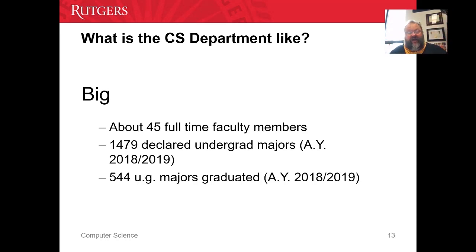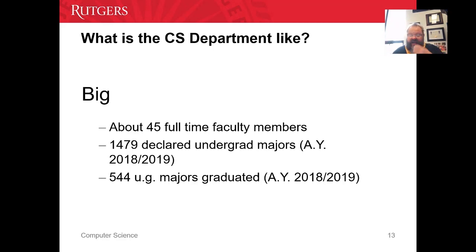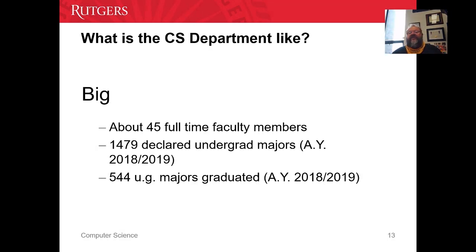As far as the CS department here at Rutgers, we are a Big Ten public research university, so we're big. We have about 45 full-time faculty members. Last year we had 1,500 declared computer science majors. Those aren't all the people taking our classes — we also have minors and people who want to come and take our classes to learn how to program. Cognitive science majors take a lot of our classes, but we had 1,500 declared majors, and we graduated 544 students,